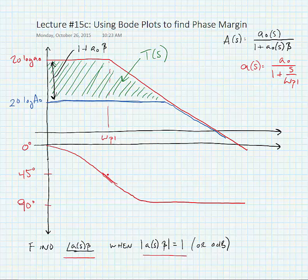The point where the loop gain goes to 0 is the point where the two curves intersect. This is T(s) is equal to 1, or 0 dB.